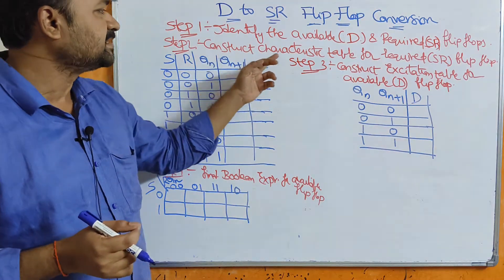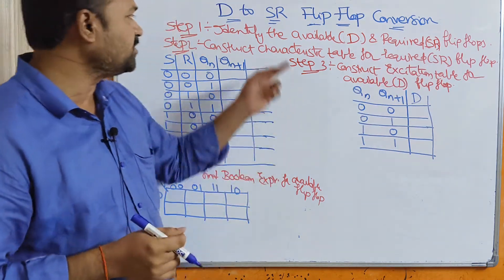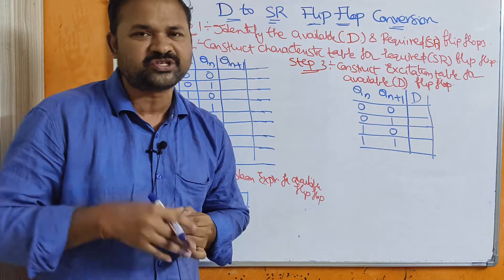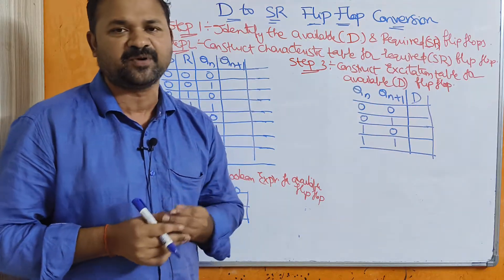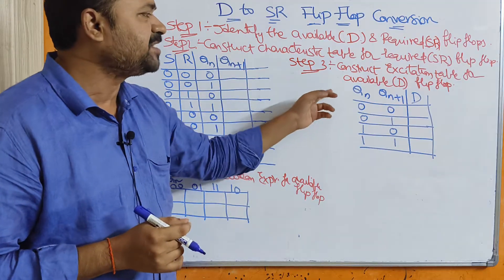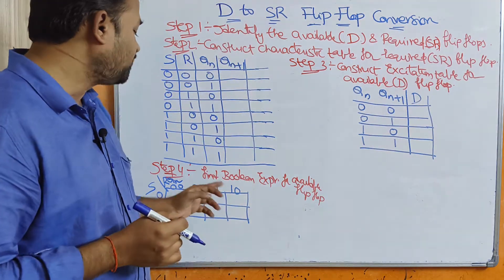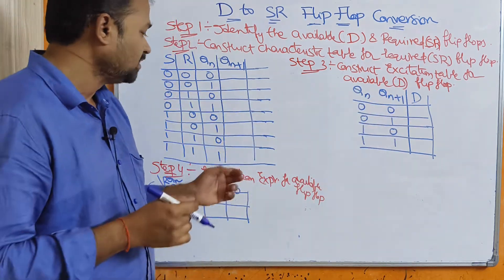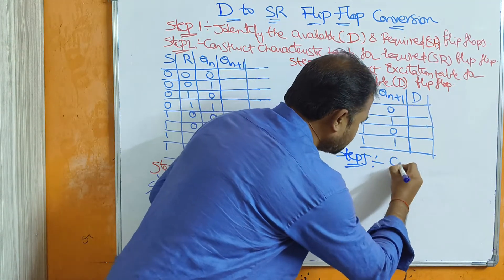Step 2 is to construct the characteristic table for the required flip-flop, which is the SR flip-flop. The next two steps are based upon the available flip-flop. Step 3 is to construct the excitation table for the available flip-flop, that is the D flip-flop. Step 4 is to find the boolean expression for the available flip-flop. And step 5 is to draw the circuit diagram.